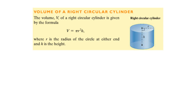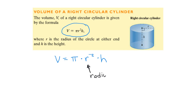Next we're looking at the volume of a right circular cylinder. When I look at this picture, I always think of a soup can, and the contents that fills it would be the volume it holds. To find the volume of a right circular cylinder, the formula is pi times r squared times h. Here, r is your radius and h is your height. You need a radius and a height in order to find the volume.